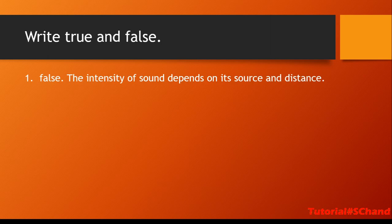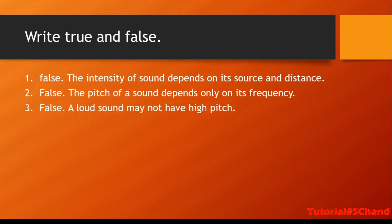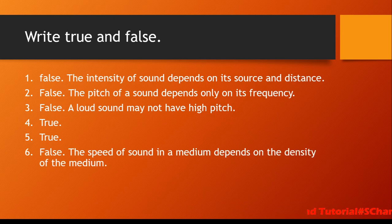Now true or false — with corrections. First: the intensity of sound depends only on its source — False; it depends on the source as well as the distance. Second: the pitch of the sound depends only on its source — False; it depends on frequency. Third: a loud sound must have a high pitch — False; a loud sound may not have a high pitch. Fourth: rats use the reflection of vibrations to locate prey — True. Fifth: sound waves are longitudinal waves — True. Sixth: the speed of sound in a medium depends partly on the density of the medium — False; it depends completely on the density of the medium.